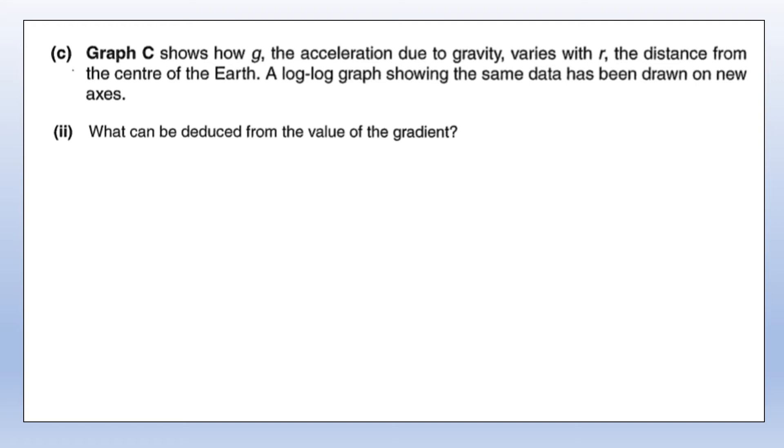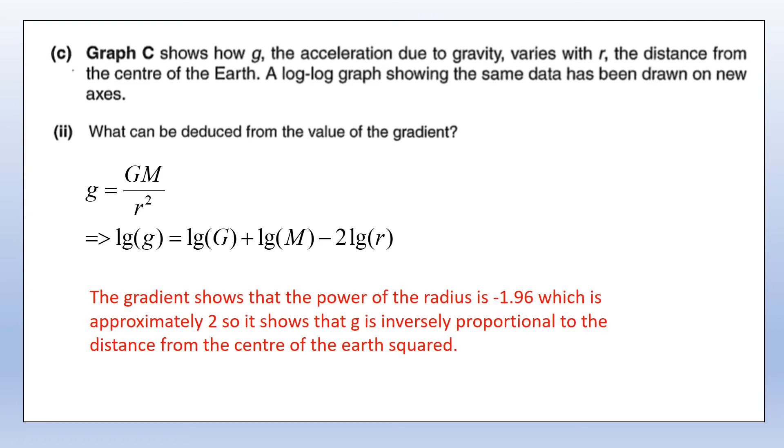What can be deduced from the value of the gradient? Let's take our equation for field strength and take logs. If you take logs of both sides, we'll have log g and we've got GM/r², so we'd end up with log G plus log M minus 2 log r. If we've got a graph of log g against log r, the gradient should theoretically be minus 2, and we found the gradient was minus 1.96, which is really close to 2. This shows that g is inversely proportional to the distance from the center of the earth squared, which is what we expect.